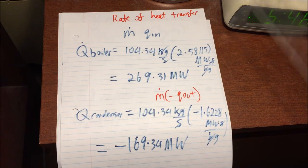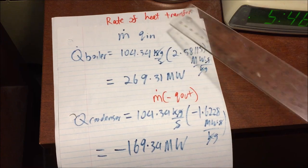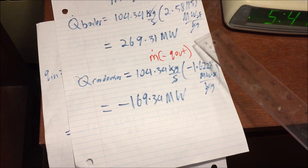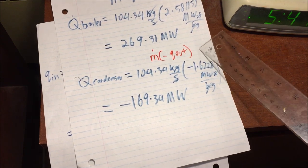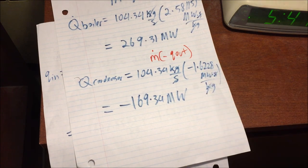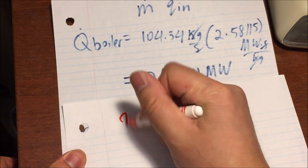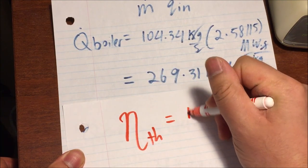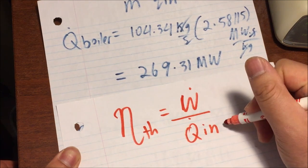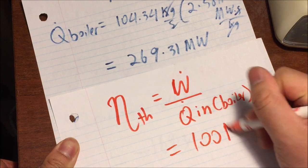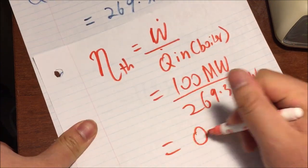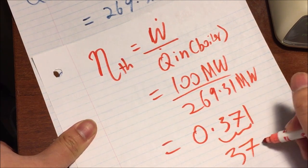Solving the rate of heat exchange, we use the formula mass flow rate times the heat in, getting 269.31 megawatts for the boiler. For the heat exchange of the condenser, it is the mass flow rate times the heat out, which is negative 169.34 megawatts. The thermal efficiency is given as the net power over the rate of heat exchange in the boiler: 100 megawatts over 269.31 megawatts equals 0.371, or 37.1%.